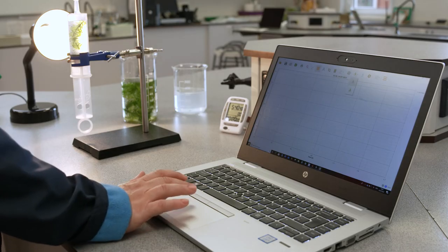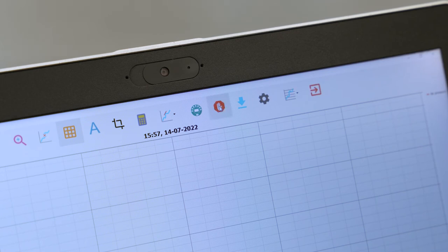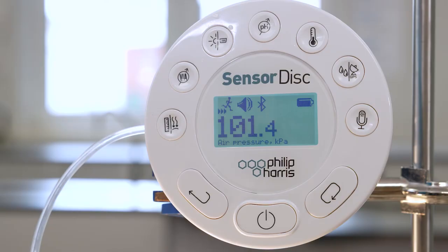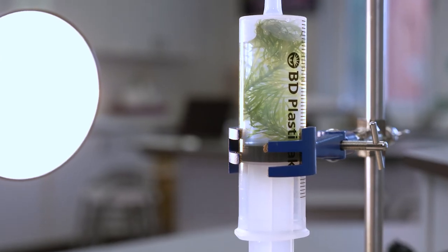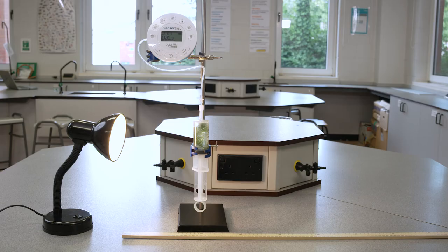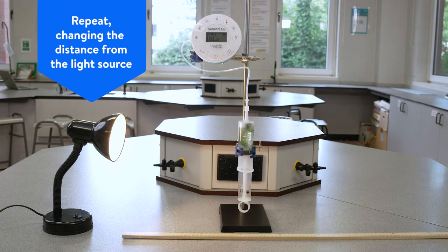Press the run icon on the software and take your measurements for a fixed amount of time. We recommend 10 minutes. Repeat this process at different distances between the lamp and the equipment.